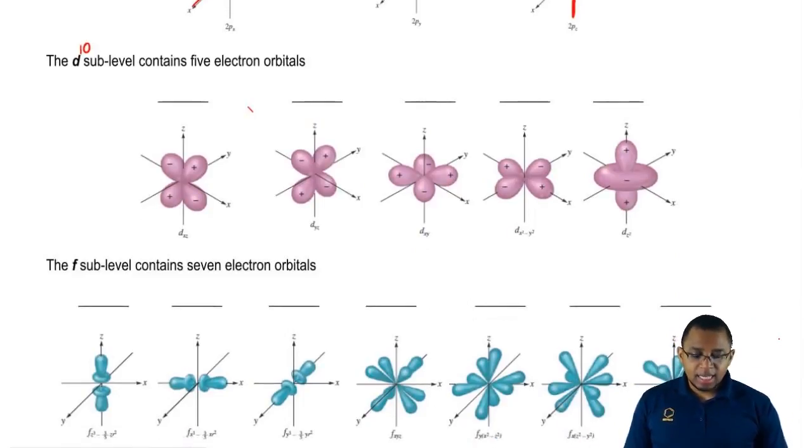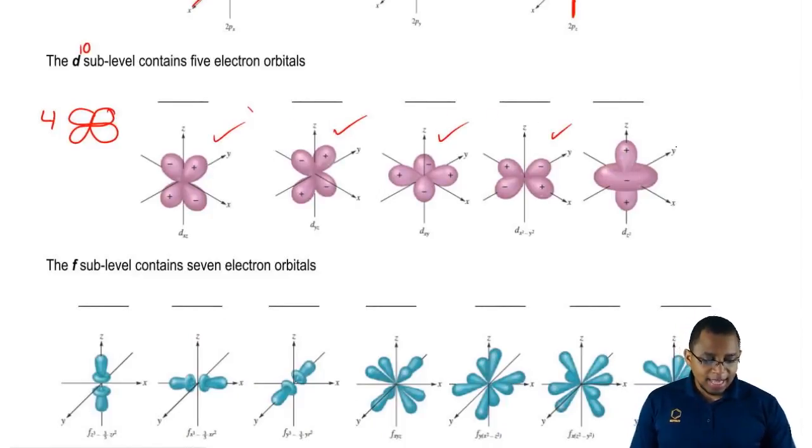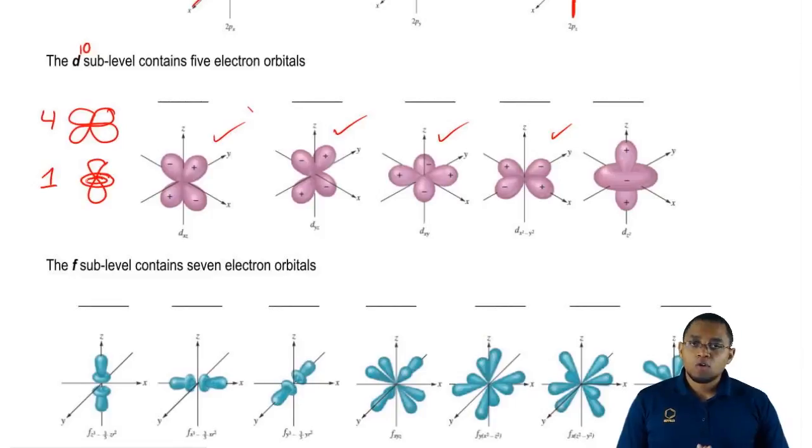In the D, we're going to have four four-leaf clovers, so these first four are all four-leaf clovers, and then the last one, the fifth one, looks like a dumbbell with a ring around it. Remember these shapes. These shapes are distinct.